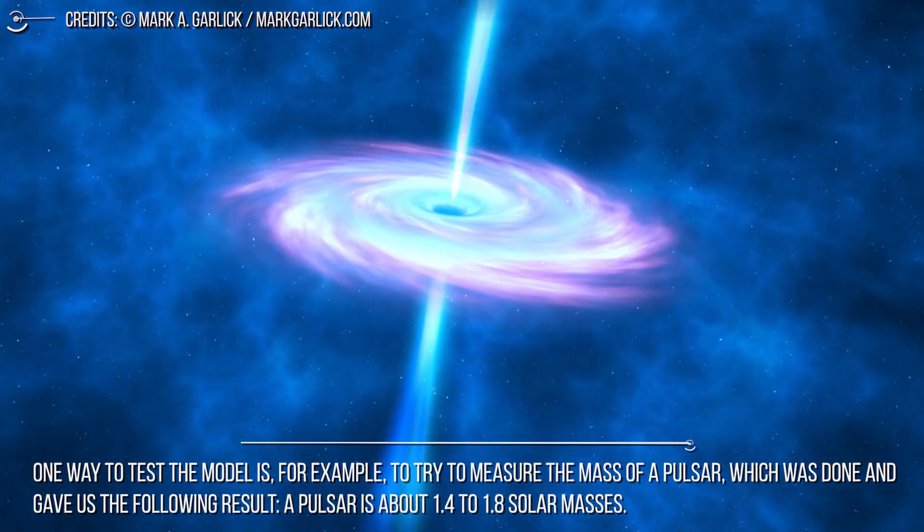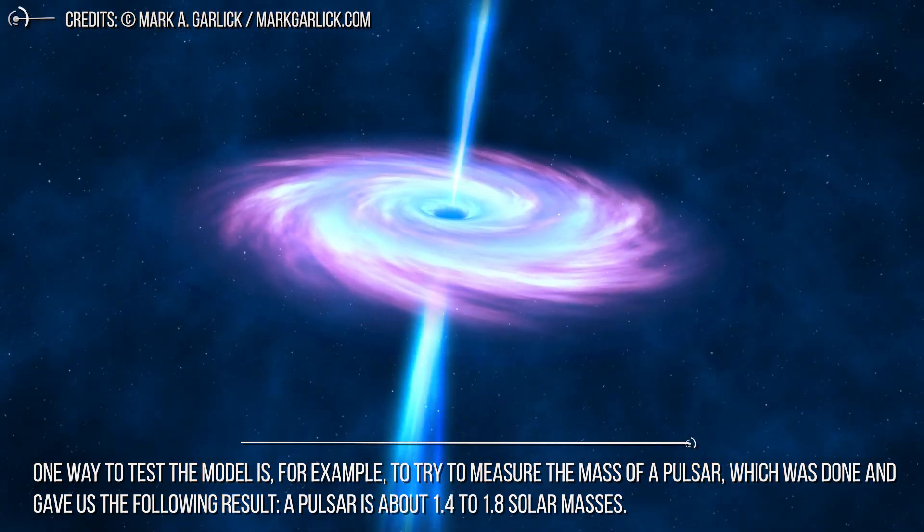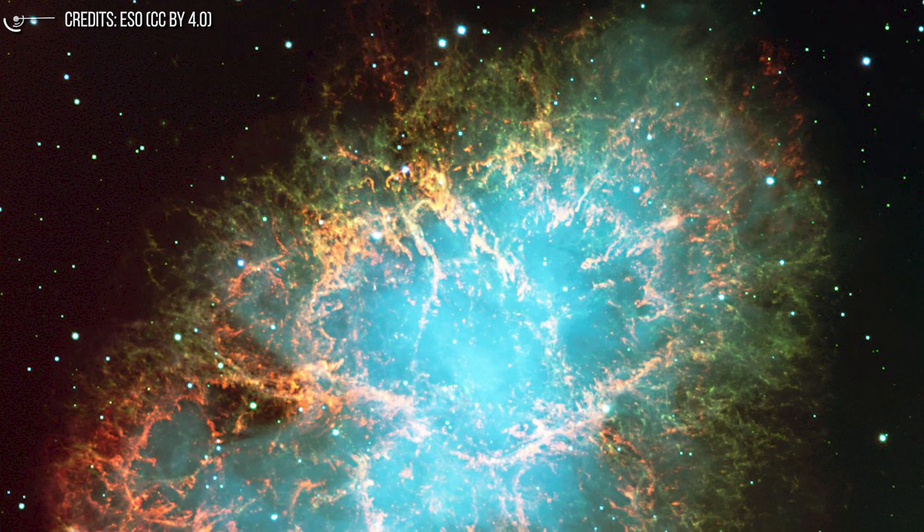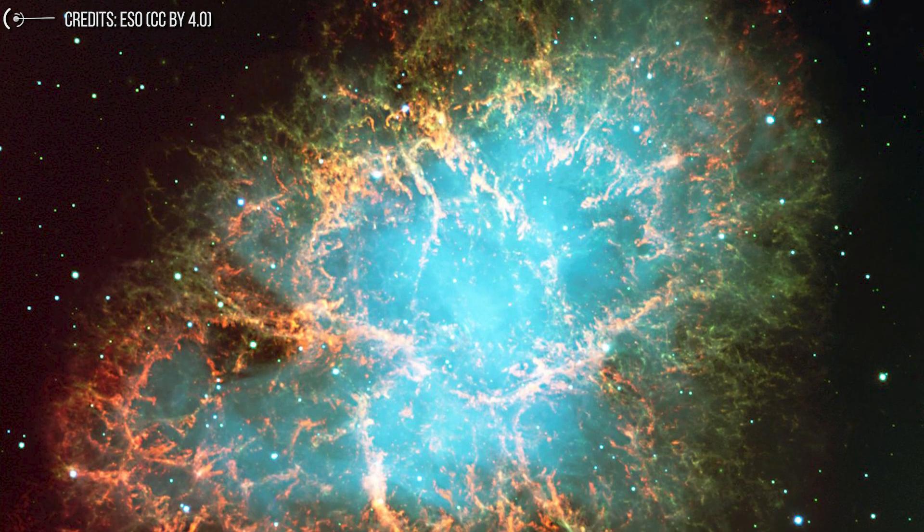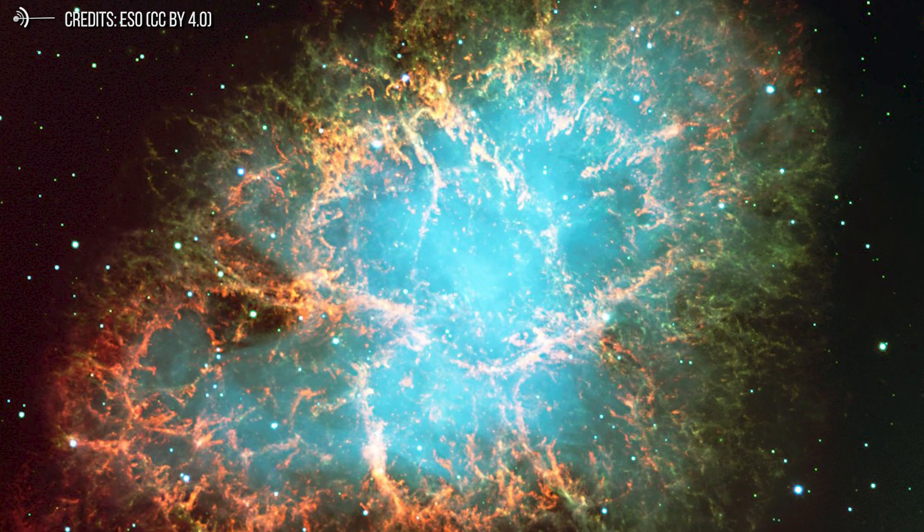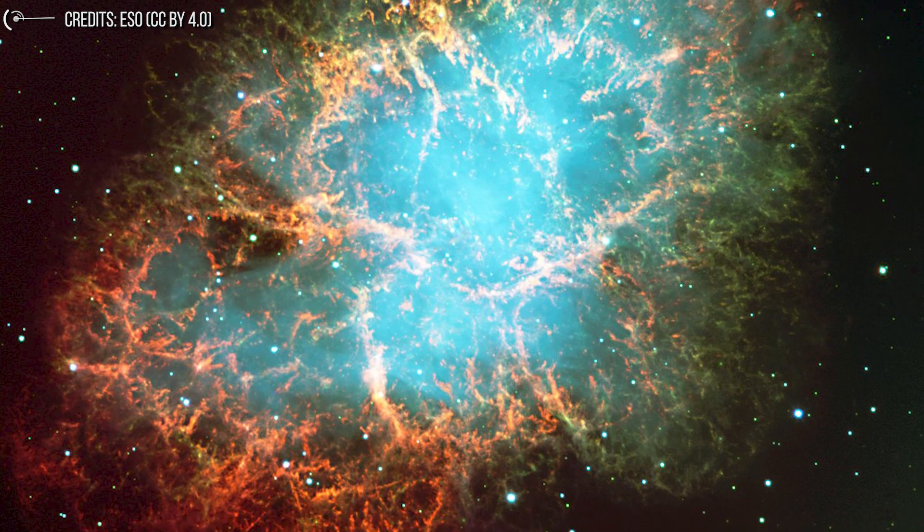But we can have another, maybe even better, confirmation of that, considering the energy conservation. When the high-energy charged particles from the neutron star pulsar hit the slower-moving material from the supernova, they energize this material and cause it to glow at many different wavelengths, just what we observe from the Crab Nebula.